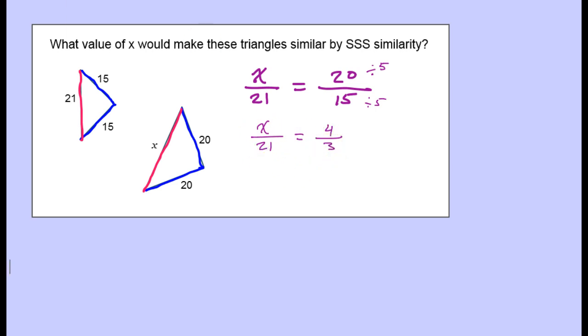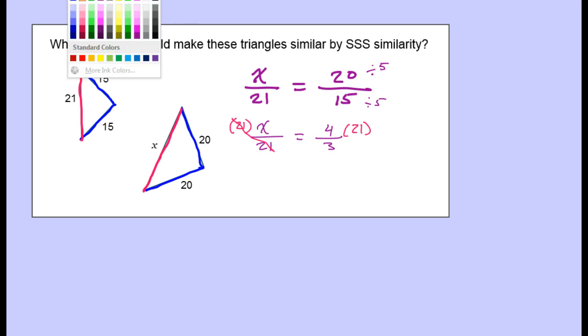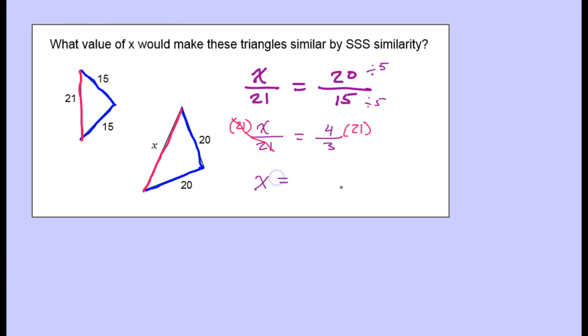So to get this x by itself, the easiest thing to do is to multiply both sides by 21. Okay, so that's going to give me x equals. Now, what I like to do, instead of multiplying the 4 times 21 right now, I would rather divide. 3 goes into 21 seven times. So 4 times 7 is 28. So I know the answer is going to be 28.